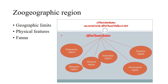When we study the zoogeographic regions, we have to study three important points. The first one is the geographic limit — the countries that are included in that particular region. The second is the physical features — we will study the climatic conditions and temperature of that region, as these factors play a very important role in the distribution of animals. And at the end we will study the fauna of that particular region.